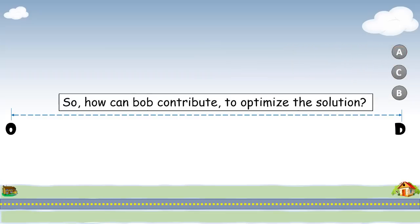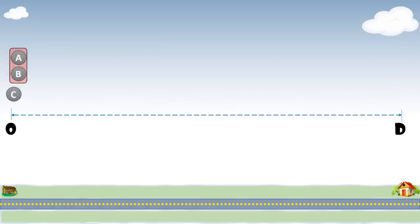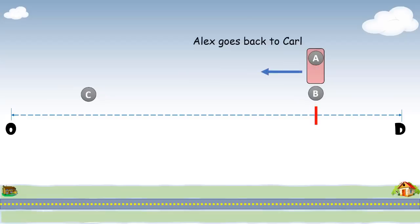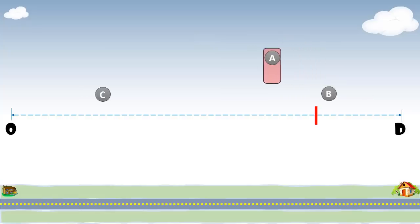So, let's see how Bob can contribute in the optimization. Alex can drop Bob few kilometers before the destination, so that he can go back to Karl comparatively earlier. And in parallel, Bob can walk few kilometers toward the destination. So, this will reduce the total time taken by all of them to reach their uncle's house. Alex will pick Karl and both will cover the remaining distance on the bike.